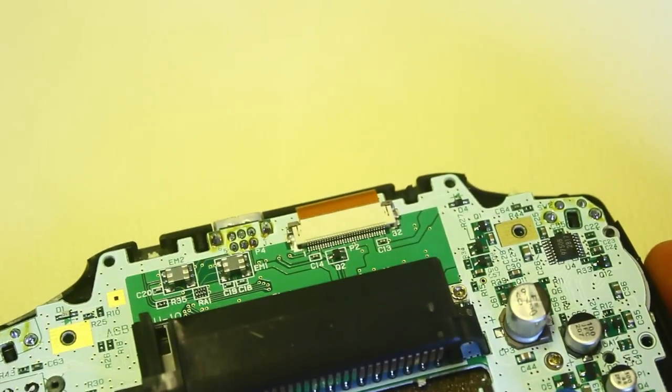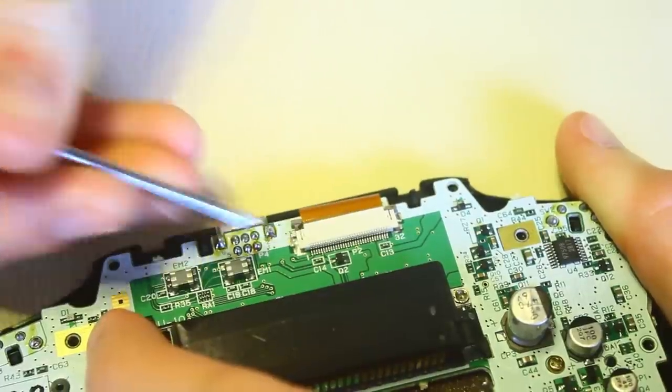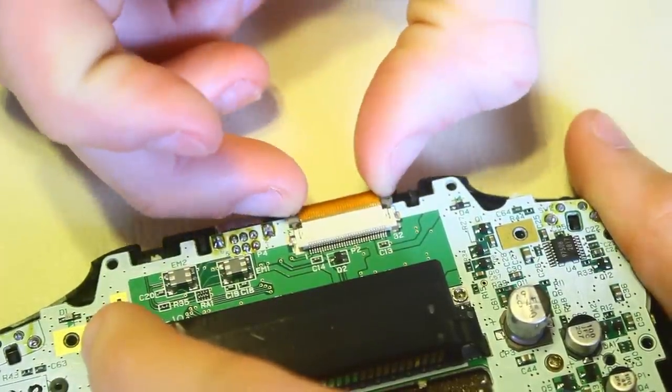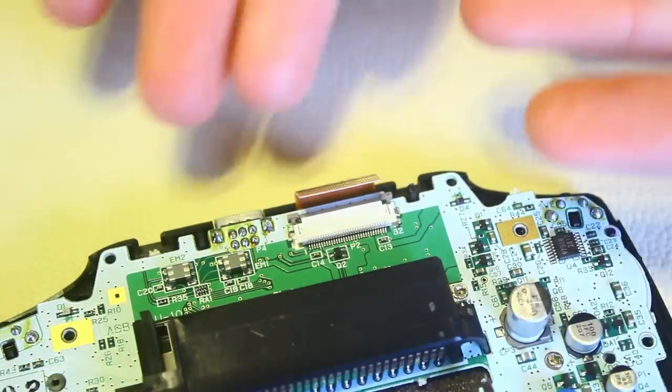Now you need to take out the ribbon cable on the top of the motherboard. Do this by pushing up the two gray tabs to the left and right of the ribbon cable. Once those tabs are pushed up, you can then pull out the ribbon cable.